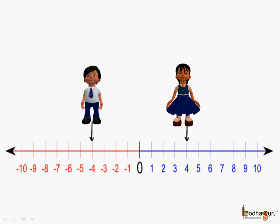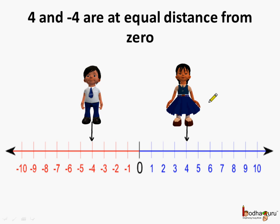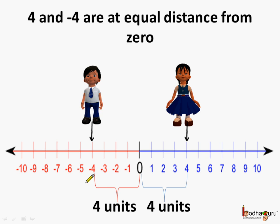Now if we see, 4 and minus 4 are at equal distance from 0. 4 is at 4 units from 0, and minus 4 is also at a distance of 4 units from 0. Even though the directions are opposite — 4 is on the right side of 0 and minus 4 is on the left side — both are at equal distance from 0.